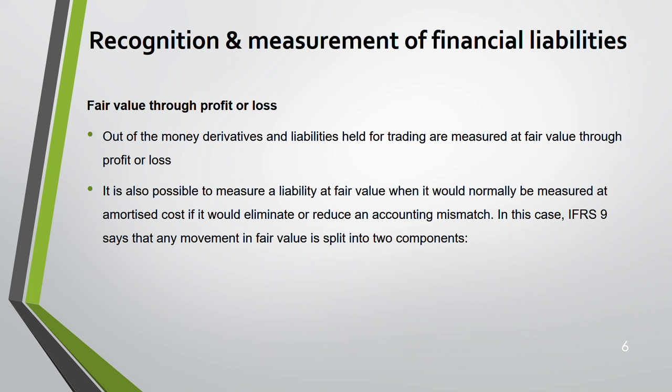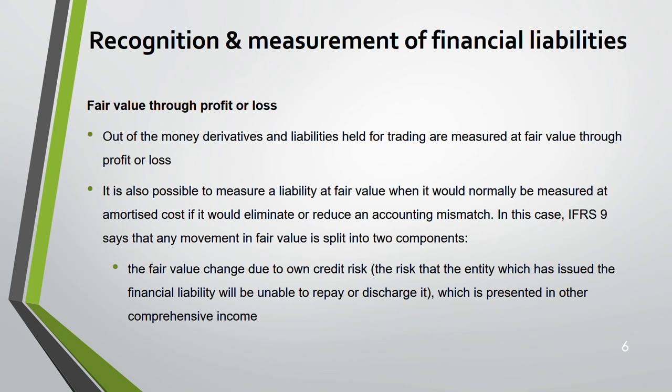In that case IFRS 9 says to split the fair value change into two components. The first component goes to other comprehensive income — specifically any change in fair value due to own credit risk, meaning the risk that the entity issuing the financial liability will be unable to repay it. The remaining fair value change, not due to own credit risk, goes to profit and loss.